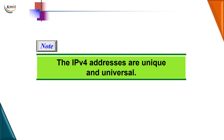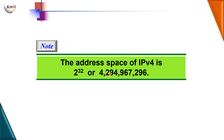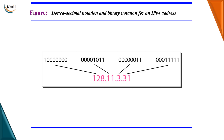An IP address is 32 bits long; the addresses are unique and universal. So how large is the address space of IPv4? Because it is 32 bits long, we can have as many as 2 to the power of 32 — that is around 4 billion IPv4 addresses. So using IPv4, we can assign IP addresses to as many as 4 billion devices.